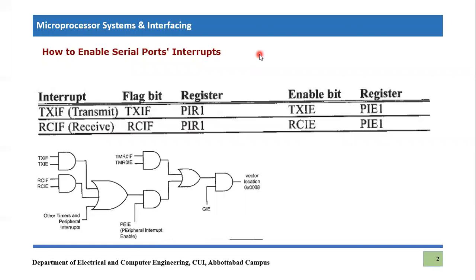In this lecture we will be understanding how to enable serial port interrupts. We know that we have already covered two types of serial port communication — one is transmission and another is reception. We have already seen the transmit flag and receive flag, which are present in the PIR1 and PIR2 registers in serial port programming.